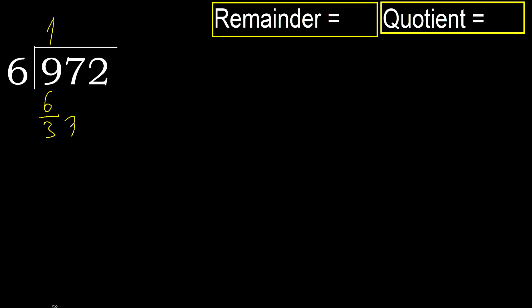Next: bring down to get 37. 6 multiplied by 7 is 42 — 42 is greater. Multiply by 6: 36 is not greater. Subtract.